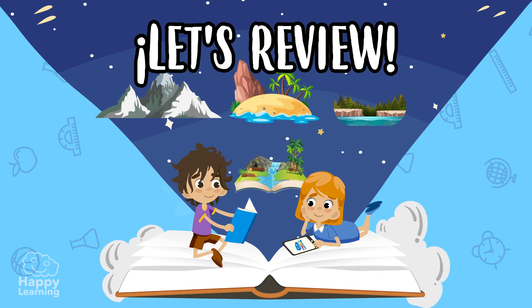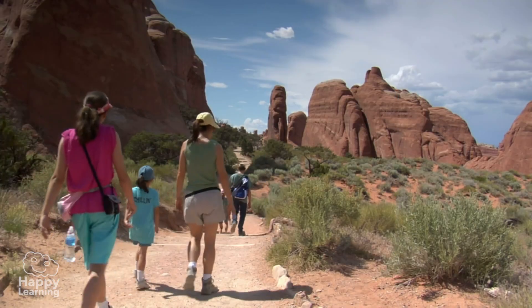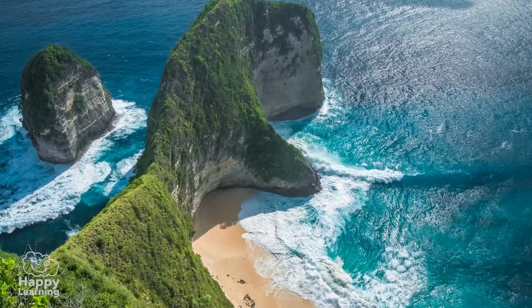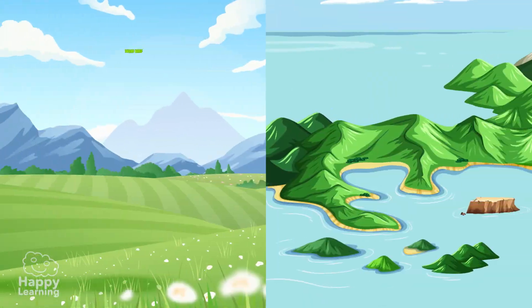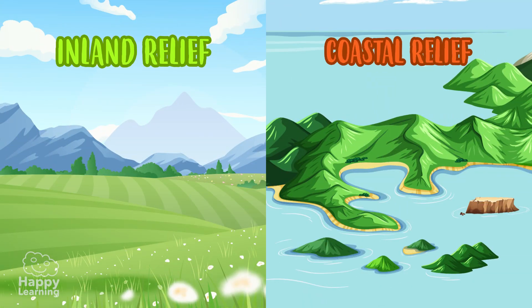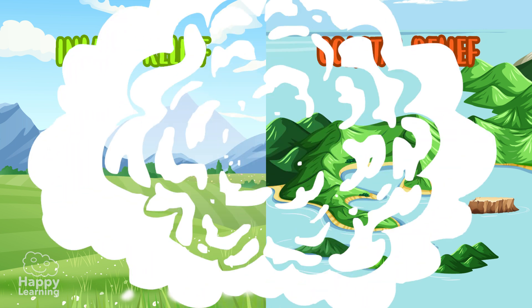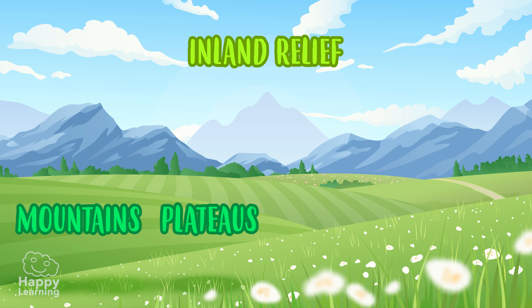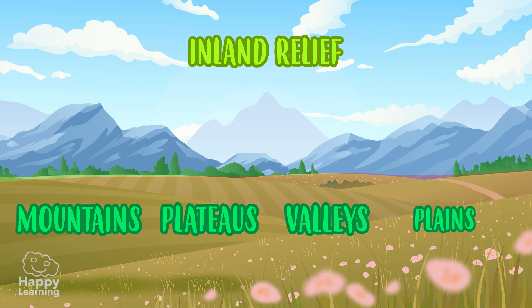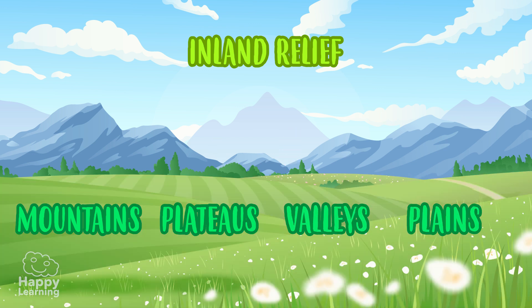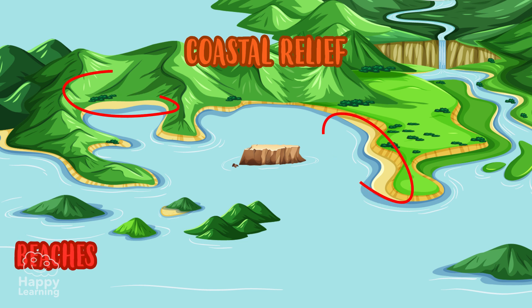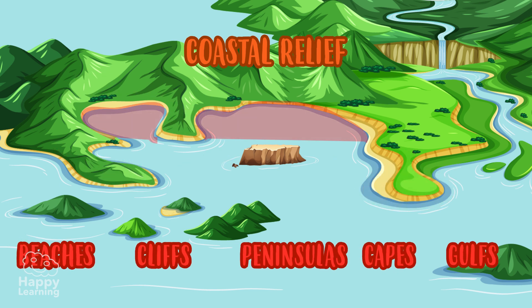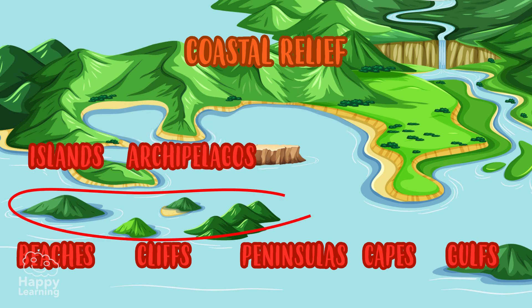Let's review what we have learnt. Relief is the set of landforms on the Earth's surface. We can divide it into two groups: inland relief and coastal relief. Inland relief has mountains, plateaus, valleys, and plains. Coastal relief has beaches, cliffs, peninsulas, capes, gulfs, islands, and archipelagos.